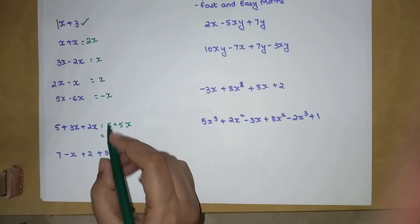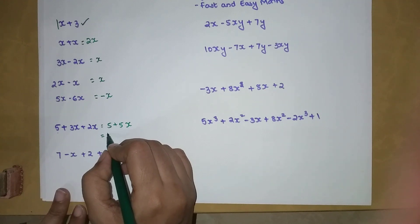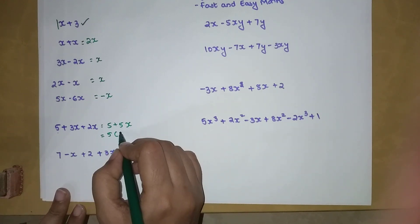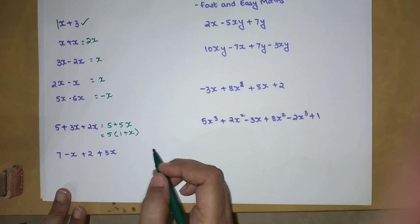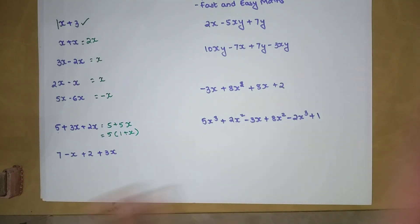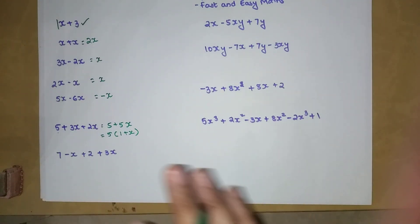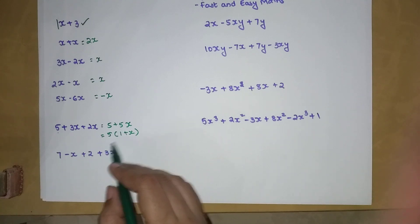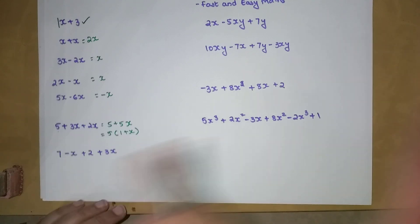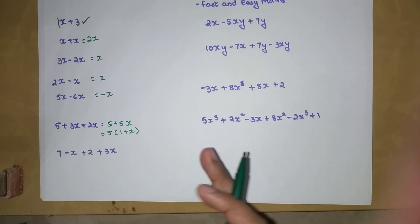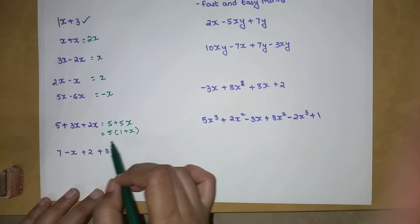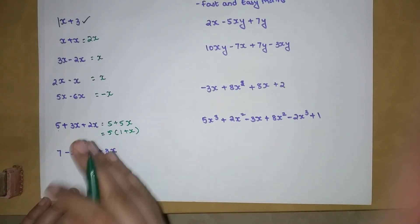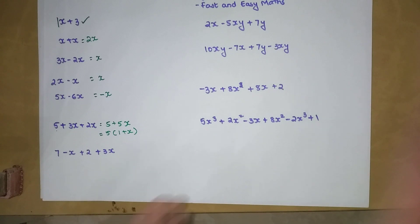Now, 5 is common to both terms, so we can factor it out and write this as 5(1 plus x). This kind of factoring practice will really help later with complicated problems, where things in your denominator might cancel. So get into the habit of writing out what's common.